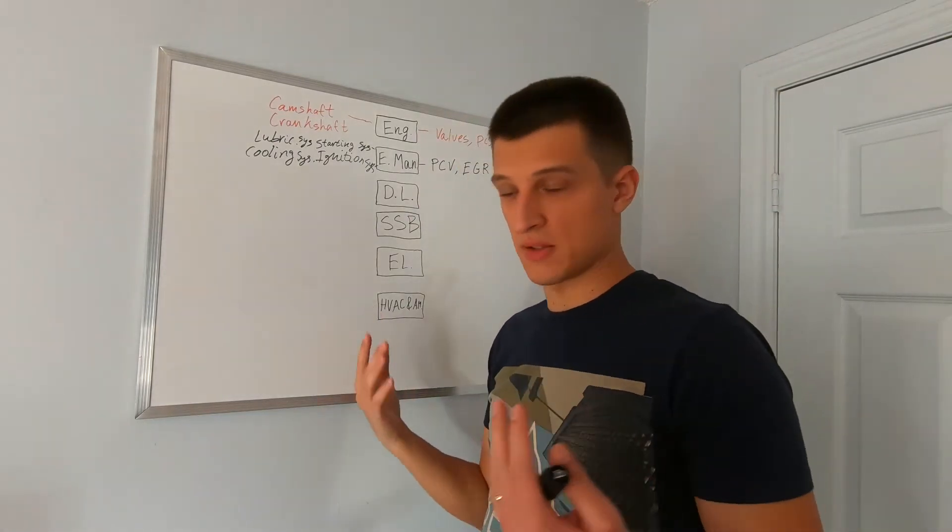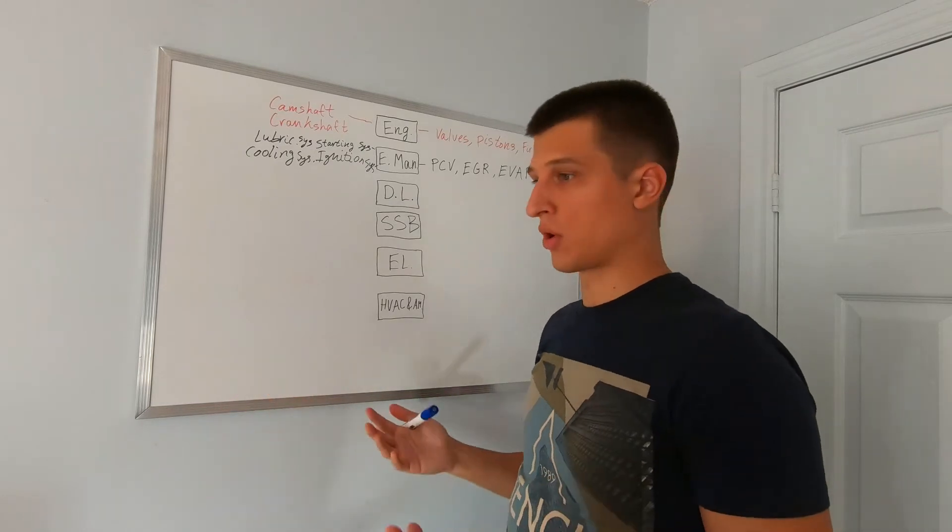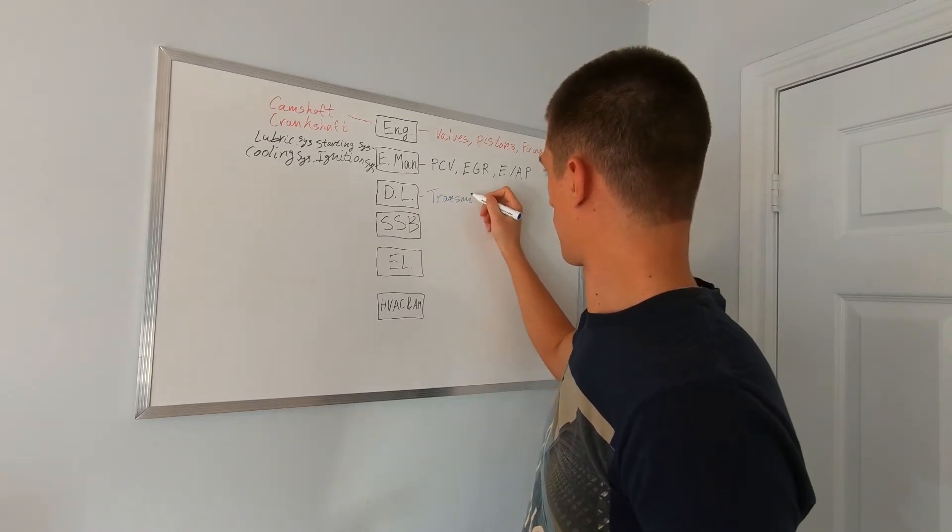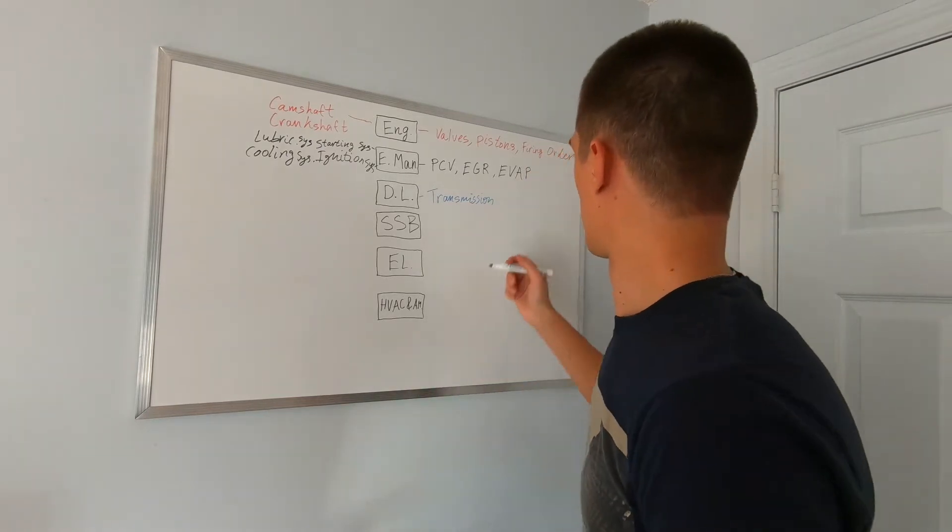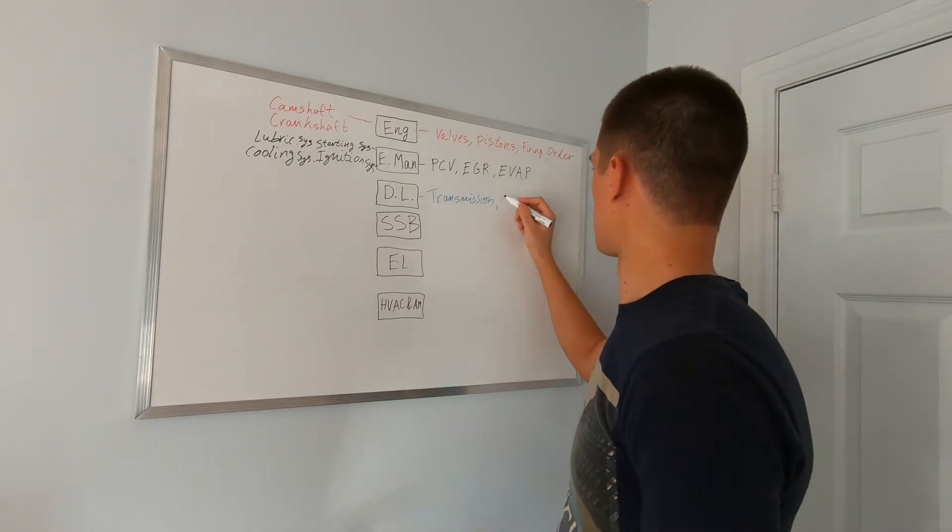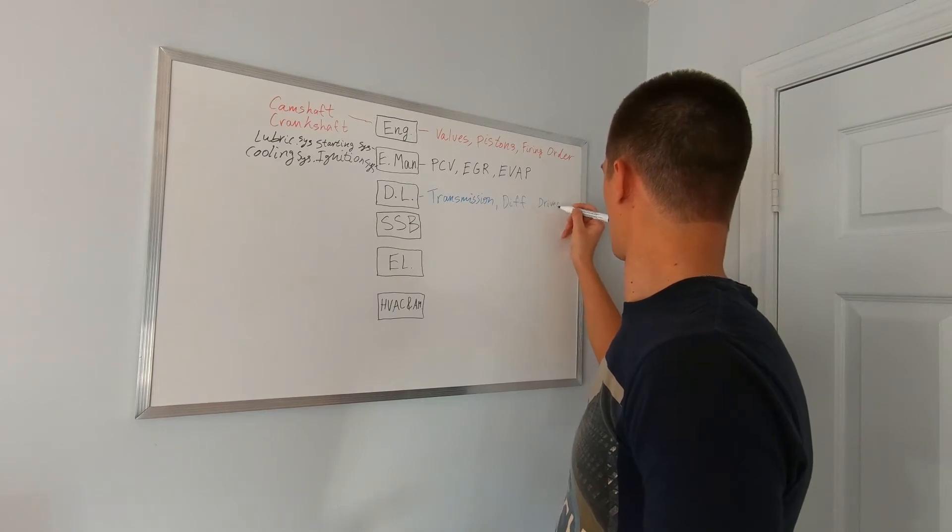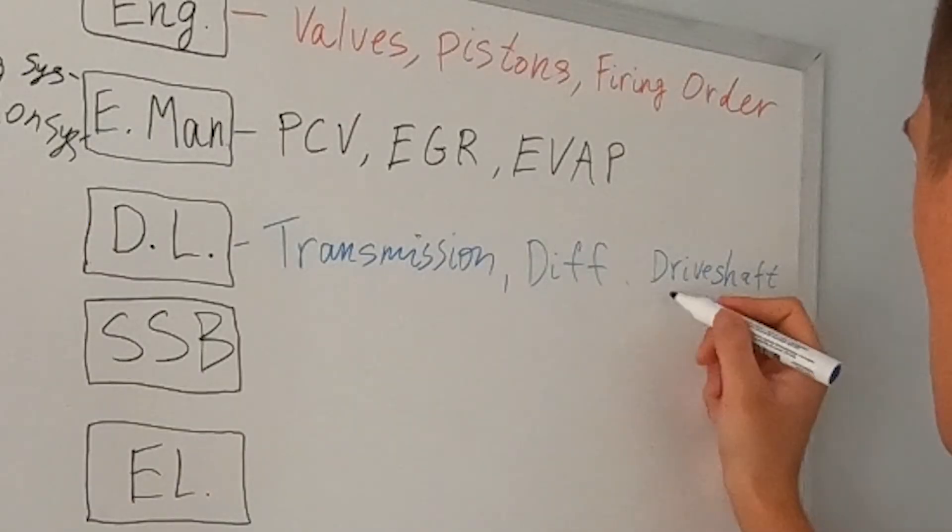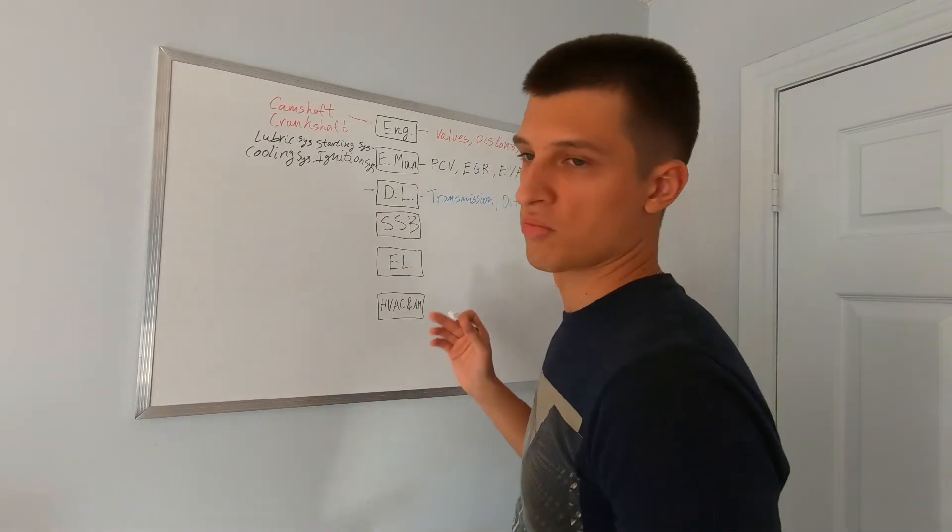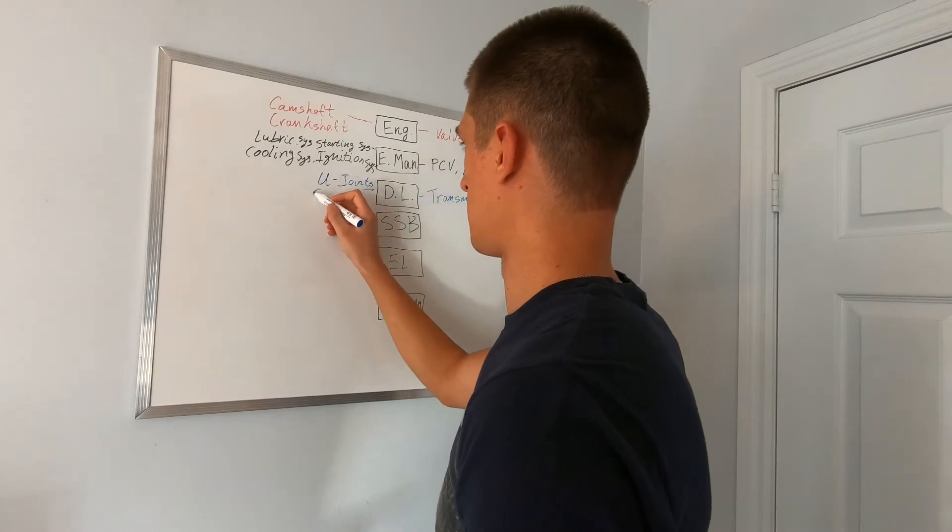Next category is the drivelines. It's pretty much anything after the engine, so it's the lines of torque, the lines of power created by the engine. Anything after the transmission or transaxle going to the driveshaft, drive axles, differential, and we also have the joints - universal joints, CV joints, constant velocity joints, and all that stuff.